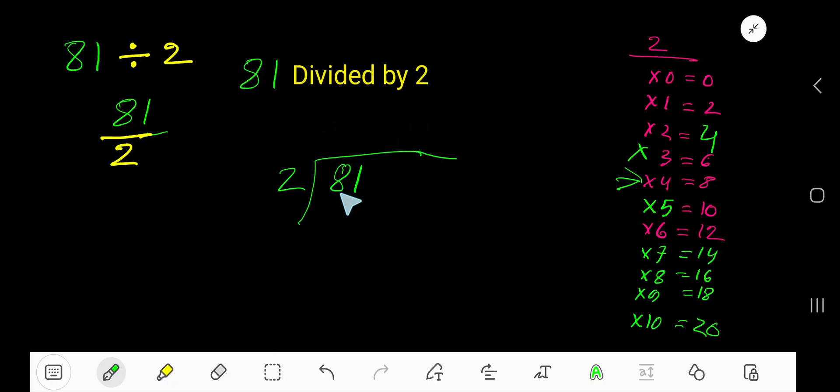81 divided by 2. Here 2 is the divisor, so we need the multiplication table of 2. Look: 2 times 0 is 0, 2 times 1 is 2, 2 times 2 is 4, 2 times 3 is 6, 2 times 4 is 8.